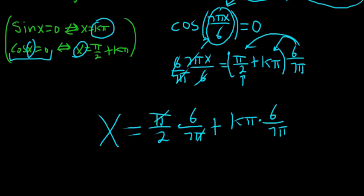Let's see, these pi's cancel. 6 over 2 is 3. So we get 3 over 7, because 2 goes into 6 three times. And then these pi's cancel. So we get plus 6k over 7.